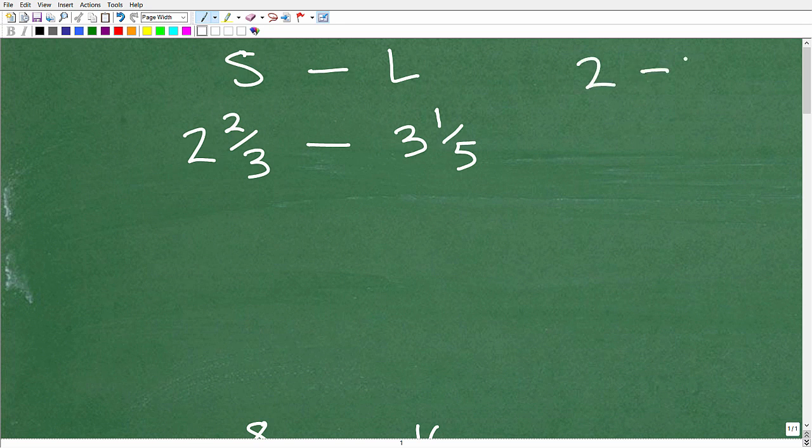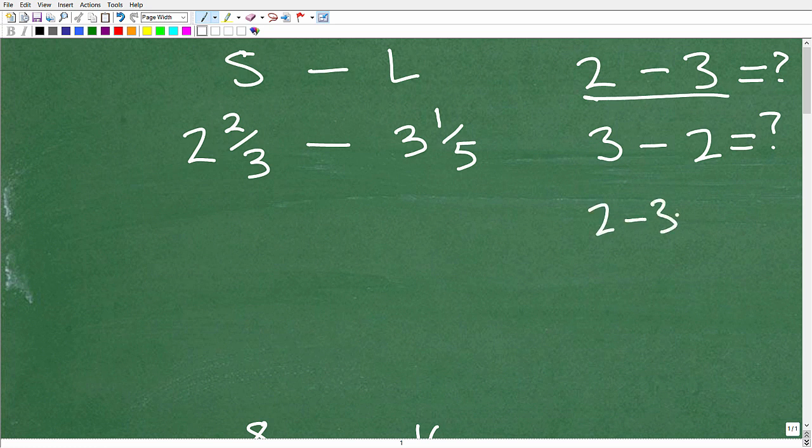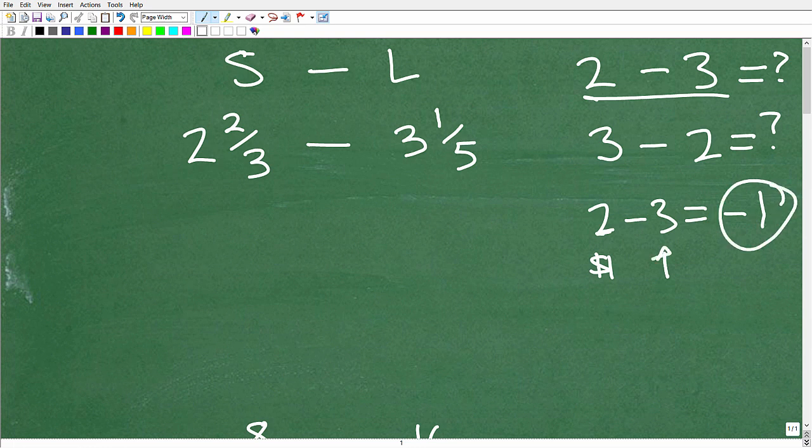Let's just take a look at a simpler problem. What if we had 2 minus 3? Let's just forget the fraction parts and let's just focus in on 2 minus 3. We're smaller minus larger. 2 minus 3. Is this the same as 3 minus 2? This is a little pop quiz here. 2 minus 3, are you going to get the same answer as 3 minus 2? No, you're not. So, 2 minus 3 is what? Well, this is negative 1.